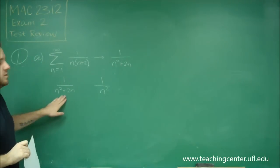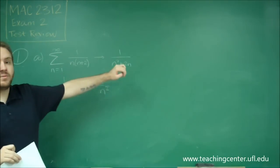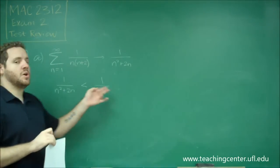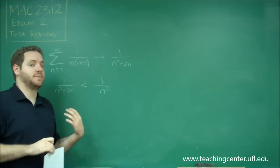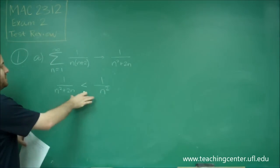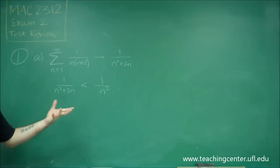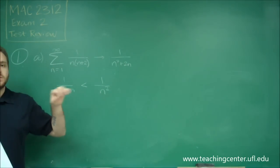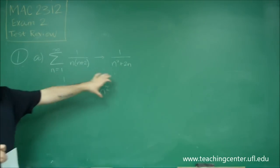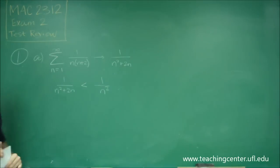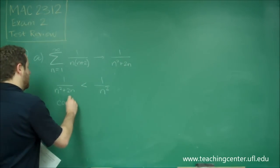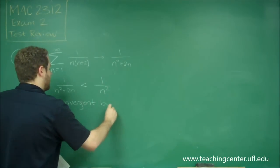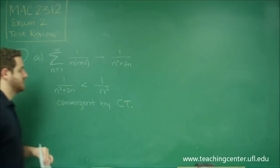If our series is smaller than something we know already converges, then this definitely converges. All we have to think about is, is this inequality true? Well, this denominator is always going to be larger than this one, which means this series is always smaller than that one — therefore yes, this is true. So this is convergent by comparison test.